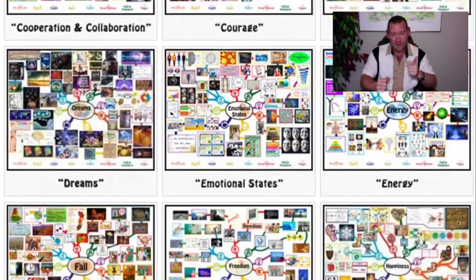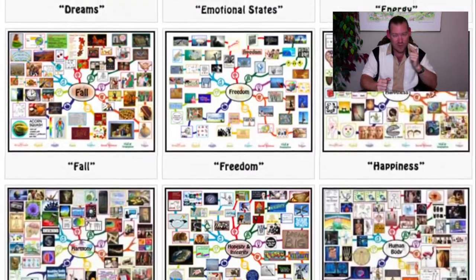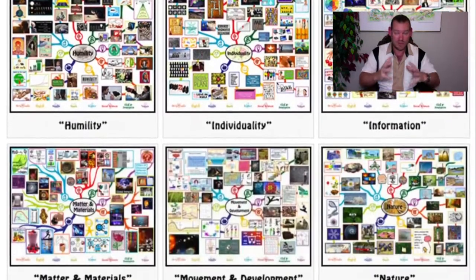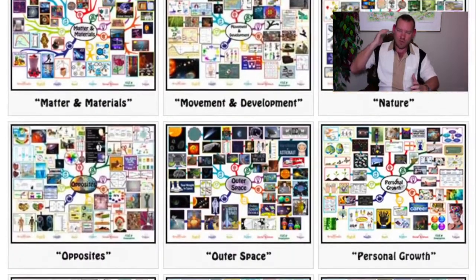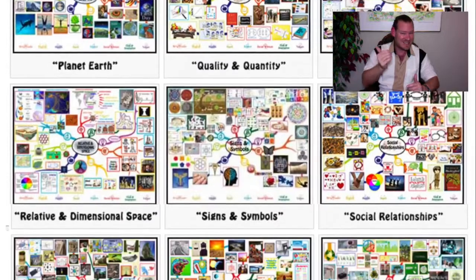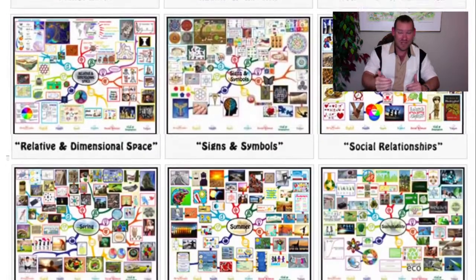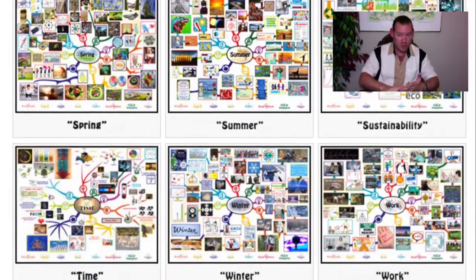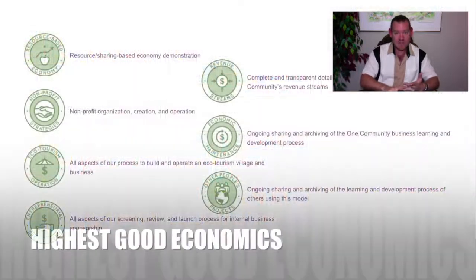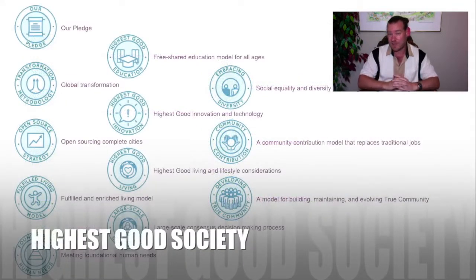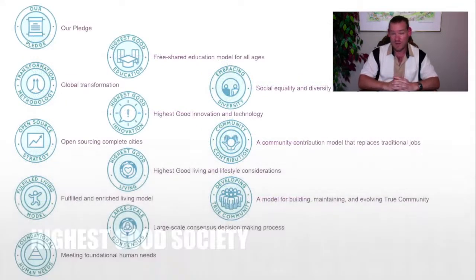If they're just building themselves a cob home, an earthbag home, a compressed earth block home, or a shipping container home, that's a step in the right direction. But for people that want to build complete teacher demonstration hubs and really go places — instead of handing people food, instead of giving somebody a fish — teaching them how to fish means teaching them how to build their own homes, grow their own food, establish their own energy infrastructure, and to live holistically and sustainably. That's what we're creating, and we want to work in cooperation and collaboration with others interested in that too.